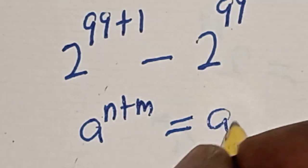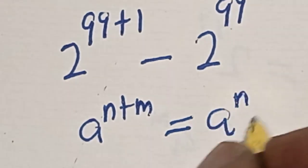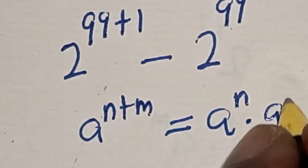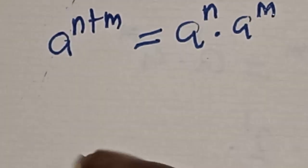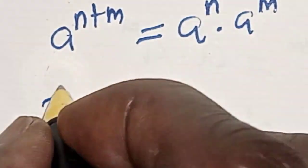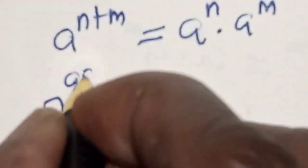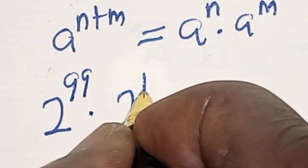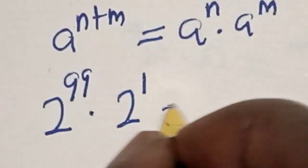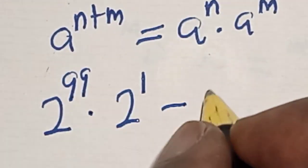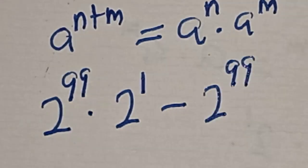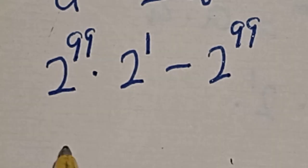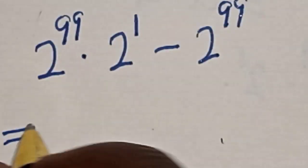Then remember this rule: a raised to power n plus m is equal to a raised to power n multiplied by a raised to power m. This becomes 2 raised to power 99 multiplied by 2 raised to power 1, minus 2 raised to power 99.